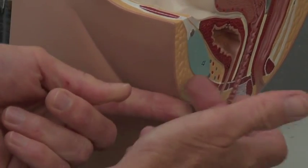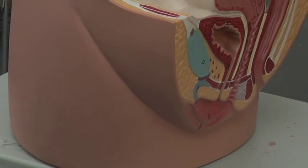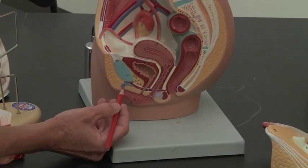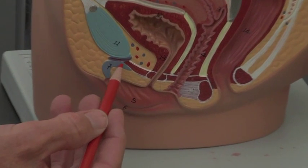Just imagine those labia minora coming up inside the labia majora and forming a little hood. Think about Little Red Riding Hood, and they cover this organ right here which is known as the clitoris.